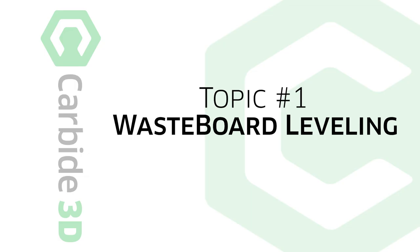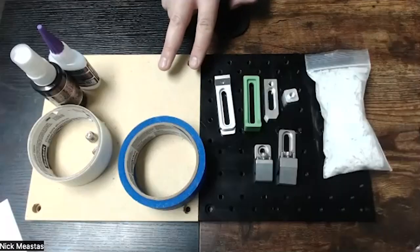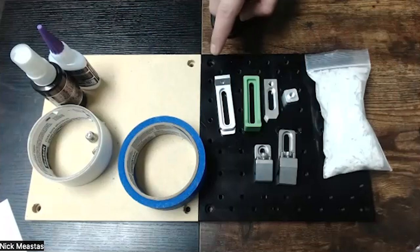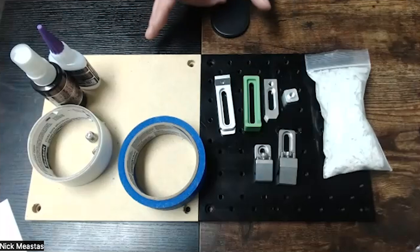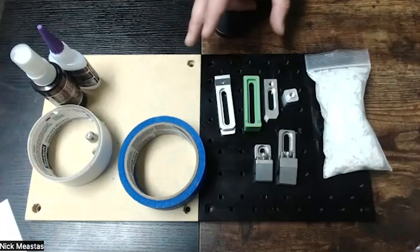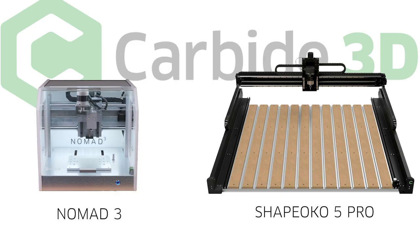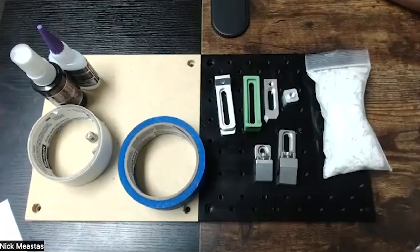The first thing that I'm going to go over is wasteboard leveling and why it's important. Here I've got two different types of wasteboards: I have an MDF one and then I also have one of our threaded tables. These are for the Nomad, they're a little bit smaller, eight by eight. All this information works on both a Nomad and a Shapeoko.